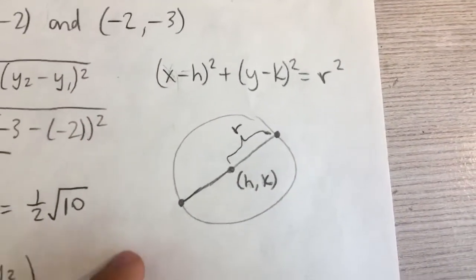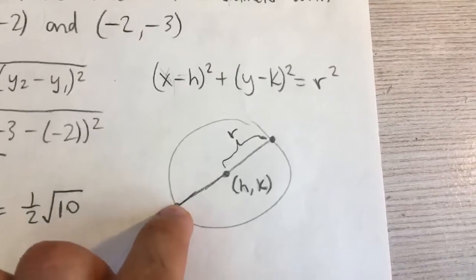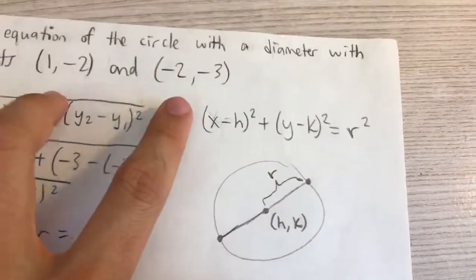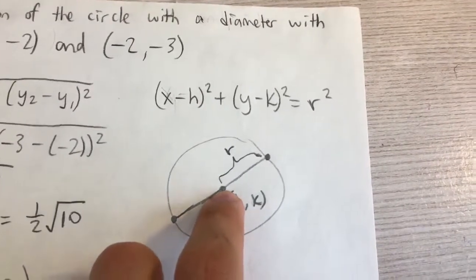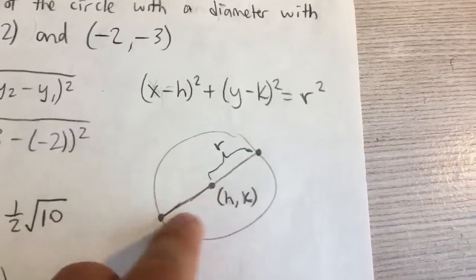First off, let's find r. If we take a look here, say these are our two endpoints on the diameter, these two points, the radius would be one-half, like half of the distance between them.